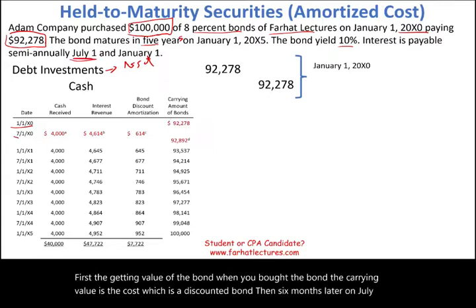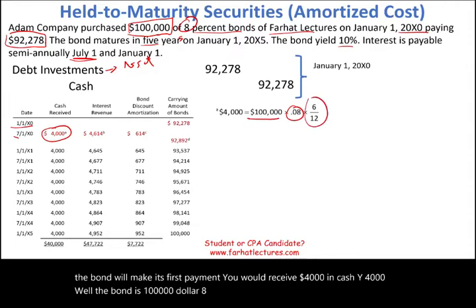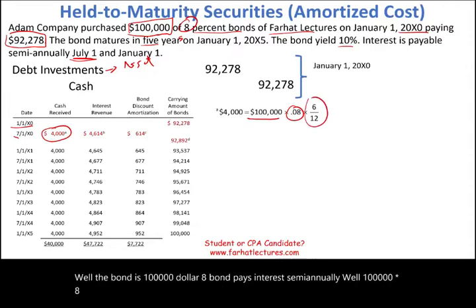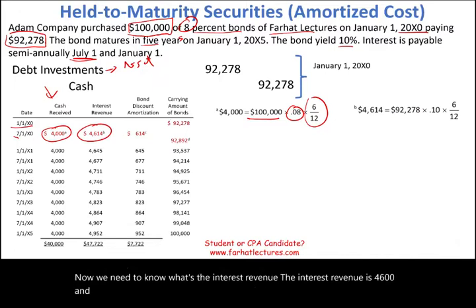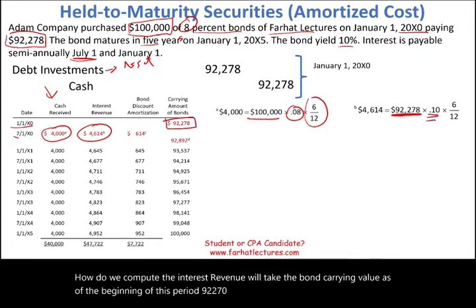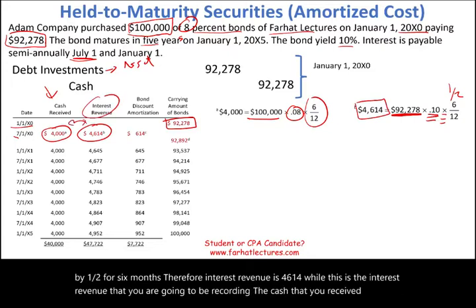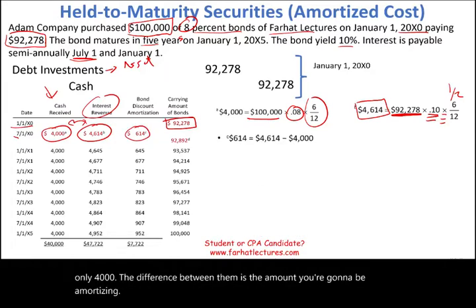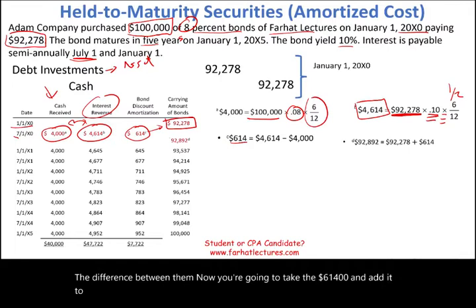You would receive $4,000 in cash. Why $4,000? The bond is $100,000 at 8% paying semi-annually: $100,000 × 8% × 6/12 = $4,000. The interest revenue is $4,614, computed as the carrying value of $92,278 times the market rate of 10% times one-half. The difference — $614 — is the discount amortization. You add $614 to the previous carrying value, bringing it to $92,894. This process repeats each period.